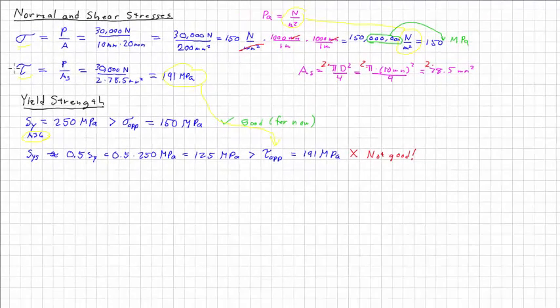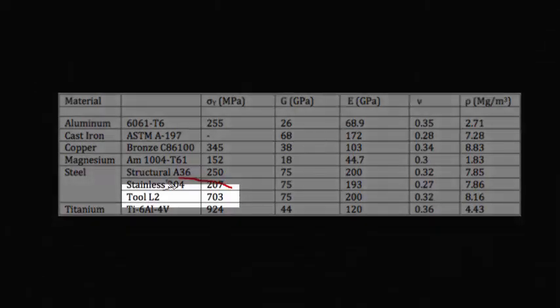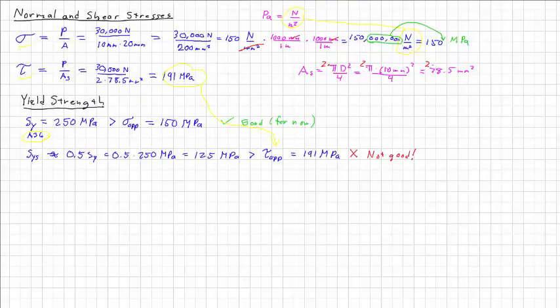So let's go back to our chart here and we could instead choose the tool steel. It's got a yield strength of 703 megapascals, so definitely a step up almost three times as much. So if we change the pin material to L2 tool steel.